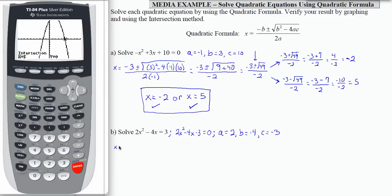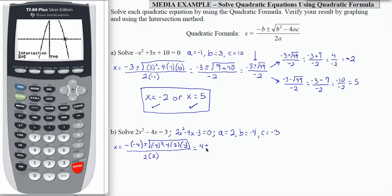I'm going to plug those into my quadratic formula very carefully. x equals negative b, so that's negative negative 4 — notice the use of parentheses — plus or minus the square root. I'm going to need a long square root bar. Negative 4, that's my b value, squared, minus 4 times a times c, which is negative 3. All of that is over 2 times a, which is 2. Simplifying: negative negative 4 is positive 4, plus or minus square root. Negative 4 times negative 4 is 16. Negative here times negative here means a positive result. 4 times 2 is 8, times 3 is 24, divided by 2 times 2 is 4.